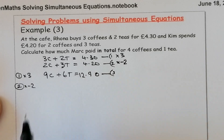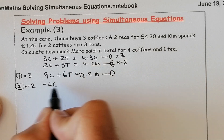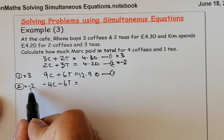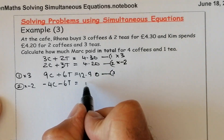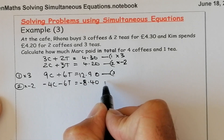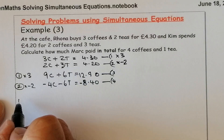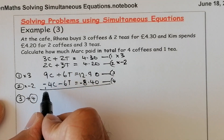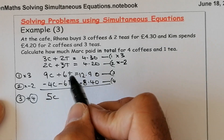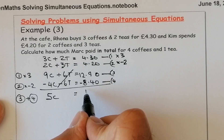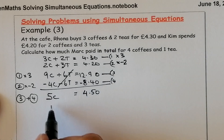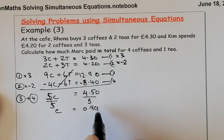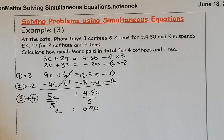For equation 2, I'm multiplying by negative 2: that gives negative 4C minus 6T, and negative 2 times £4.20 gives negative £8.40 — that's equation 4. Adding equations 3 and 4: 9C plus negative 4C gives 5C, the T terms eliminate, and £12.90 minus £8.40 leaves £4.50. Dividing by 5 on both sides gives C equals £0.90, which is 90 pence.